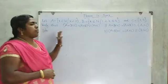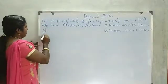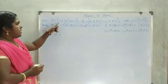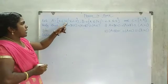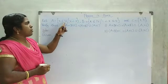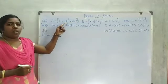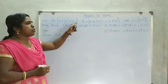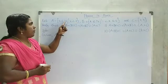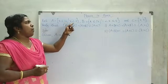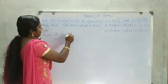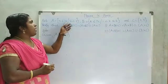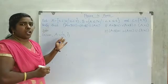There are three questions. First we write the given. A is equal to the set of all X belonging to W such that X less than 2. W means whole number. Whole numbers start from 0, 1, 2, 3, etc. X less than 2 means don't take the number 2. So A is equal to {0, 1}.